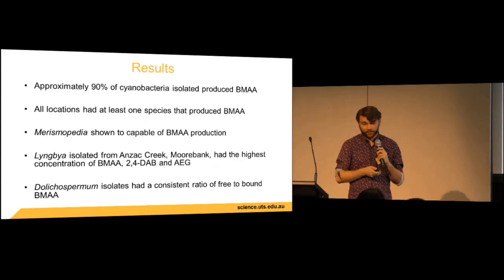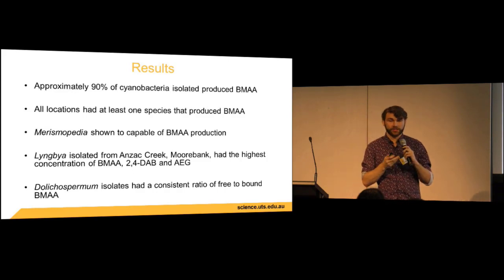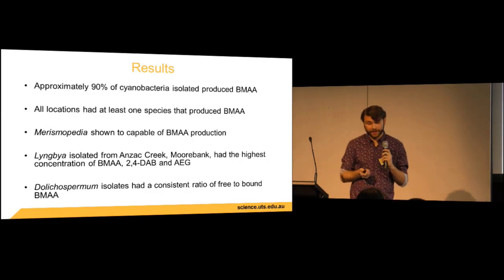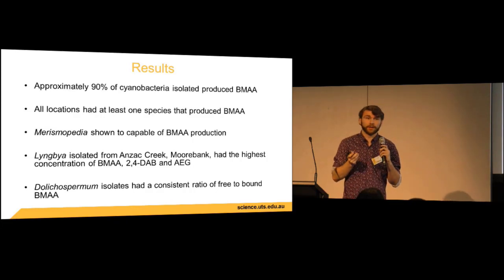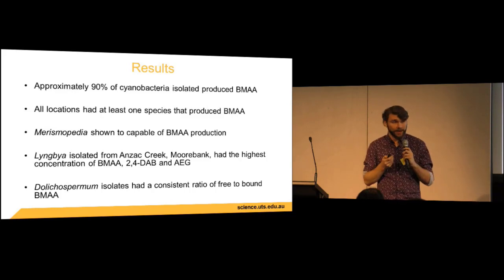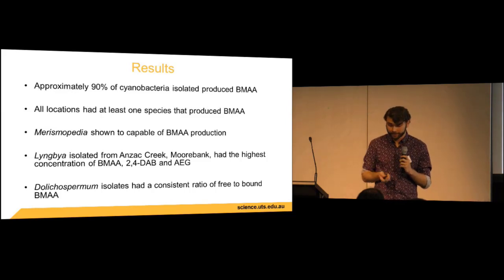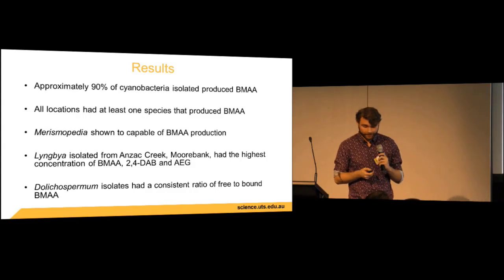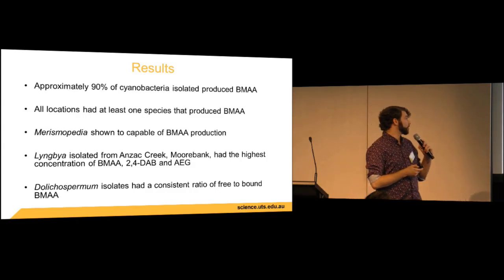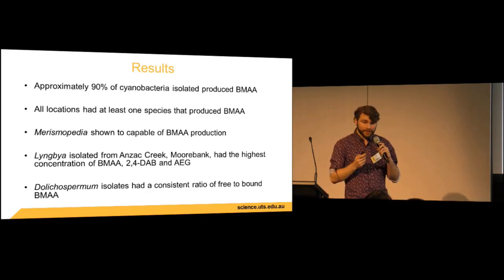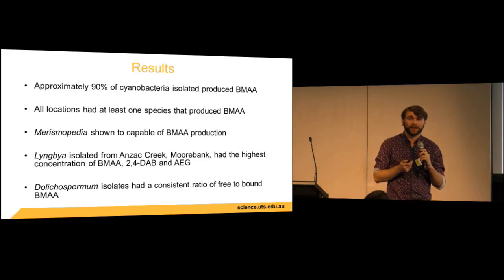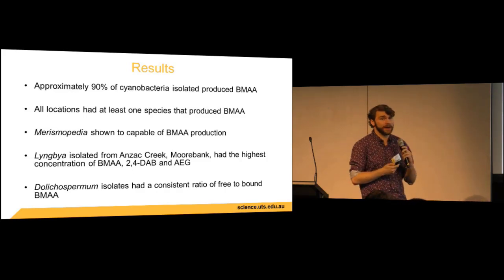Approximately 90% of our isolated cyanobacteria had detectable levels of BMAA, and all sampling locations yielded at least one species capable of BMAA production. A novel finding was that Merismopedia — which has never previously been examined for BMAA or its isomers in the literature — was found to have detectable BMAA. Our highest concentrations of BMAA, 2,4-DAB, and AEG all came from the same isolate: a Lyngbya isolated from ANZAC Creek, Moorebank. Our Dolichospermum isolates showed a consistent ratio of free to bound BMAA — a relationship not previously established in the literature.